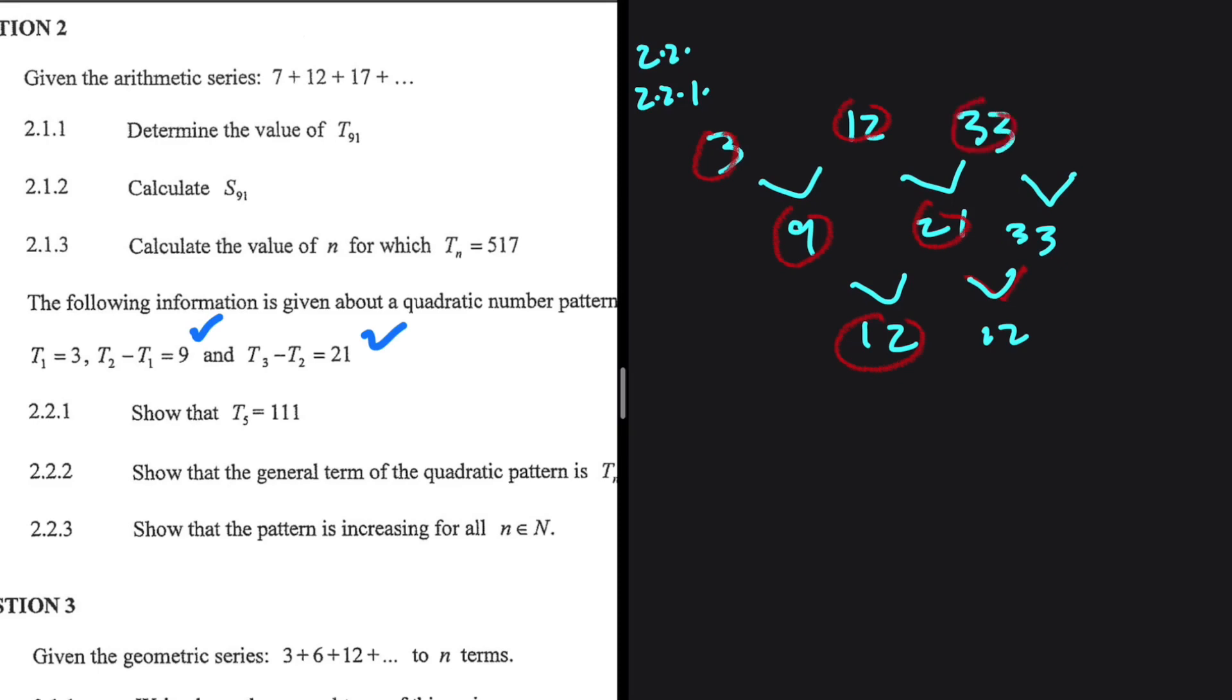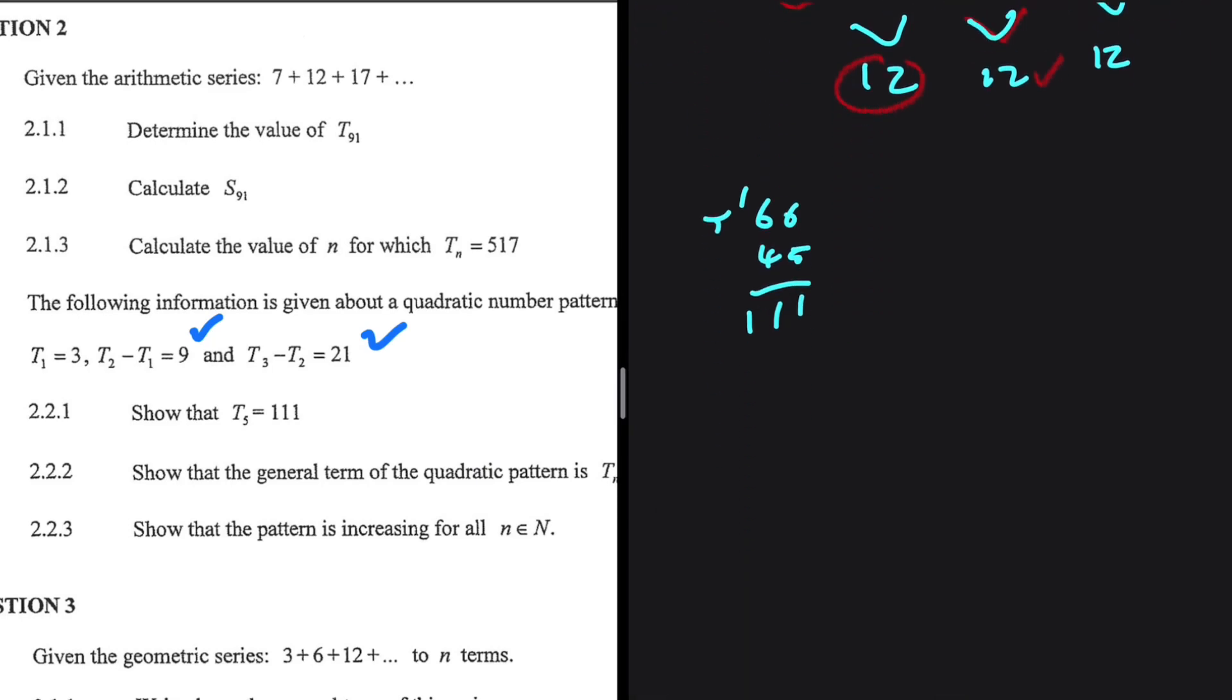On the other hand, 33 plus 33 should give us T4. That is 66. And then 12 plus 33, that will give us 45. And then 45 plus 66 should give us T5. So 66 plus 45, 1 carry 1, 111. So indeed T5 equals 111. We have showed that.